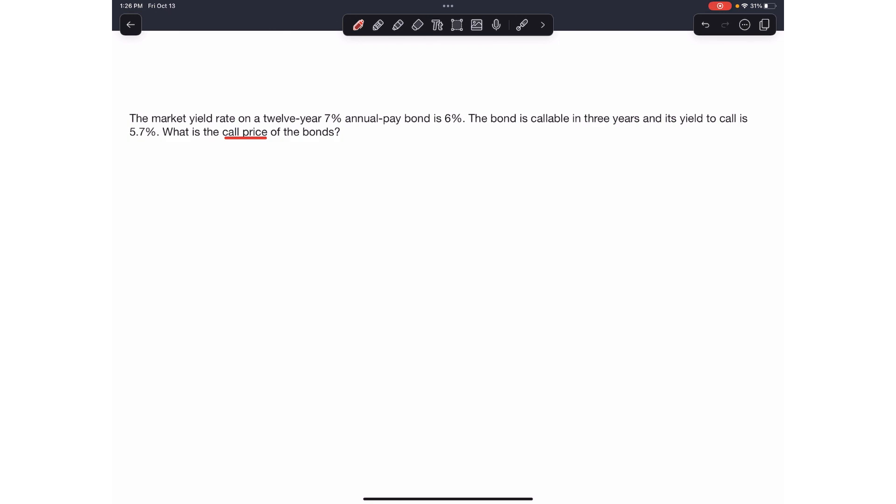So the first step would be to find the current price of the bond, the present value. We've got here a 12-year bond that pays a 7% annual coupon and a yield. So we've got a 7% annual coupon, which means the coupon payment would be 70, 7% of $1,000. Here's your YTM.